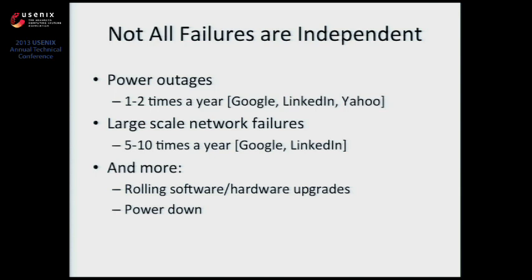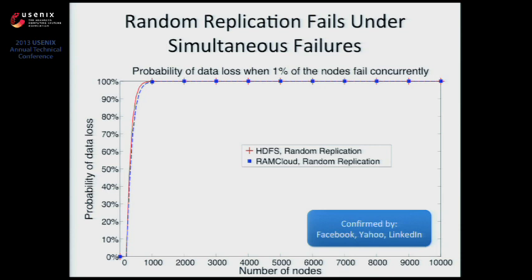In this talk, we'll focus on one particular type of failure, namely power outages — that is when about 1% of the nodes do not reboot properly and you cannot access their data, at least for a long period of time. However, the same techniques and concepts introduced in this talk can be applied to any type of correlated failure.